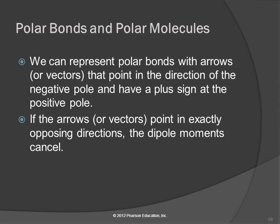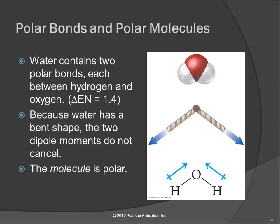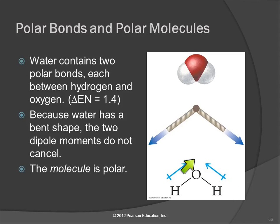If we have something like water, it has a bent structure. Each O–H bond is polar — hydrogen is less electronegative, oxygen is more. We represent each bond's dipole moment as a vector. When we add those two vectors, they don't cancel — we end up with a net vector going straight up the middle. So oxygen has a partial negative charge and the hydrogen end has a partial positive charge. Water is polar because of its bent shape. If it were linear, it would be nonpolar like CO2.